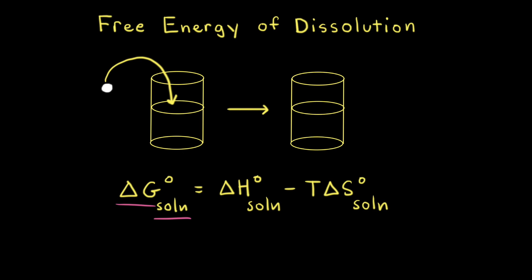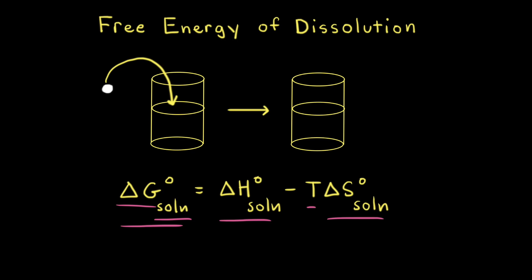We could also call this the free energy of dissolution. We can calculate delta G-naught of solution by taking the standard change in enthalpy of the solution and from that subtracting the absolute temperature times the standard change in entropy of the solution. So let's look in more detail at what determines the signs for delta H-naught and delta S-naught.